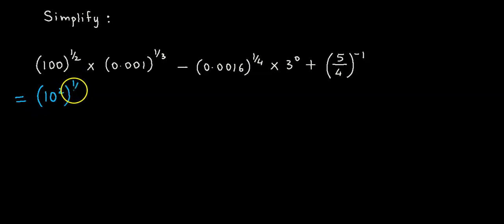The whole thing raised to half into 0.001. This could be expressed as 1 upon 1000, the whole thing raised to 1 by 3.